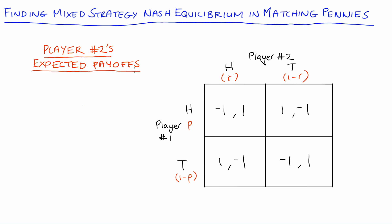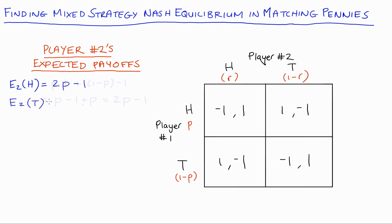Now let's construct player two's best responses. Player two's expected payoff of playing heads: with probability p player one plays heads (player two gets one), and with probability one minus p player one plays tails (player two gets negative one). This reduces to two p minus one. Player two's expected payoff of playing tails: with probability p player one plays heads (player two gets negative one), and with probability one minus p player one plays tails (player two gets one). This reduces to negative two p plus one.